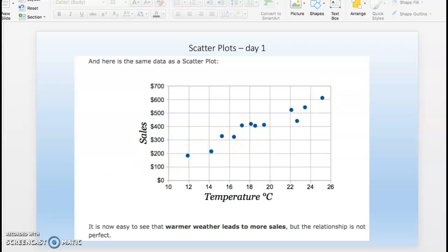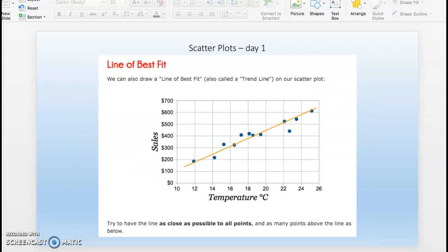What we do is draw what's called a line of best fit, trying to model a linear relationship even though it's not perfectly linear. It's important to draw that line as close to all the points, with as many points above the line as below the line. Remember that: as many points above the line as below the line when you draw the line of best fit.